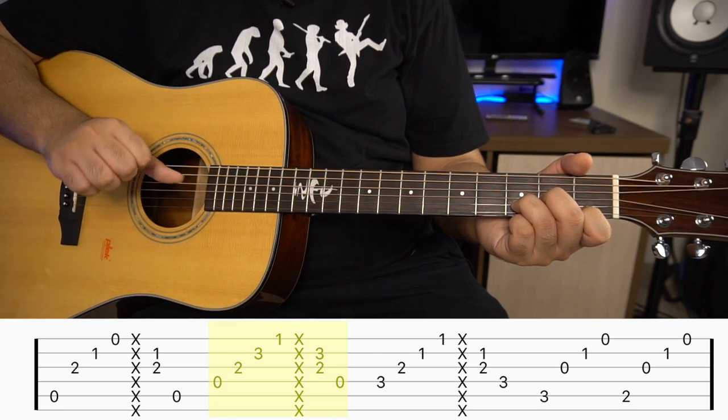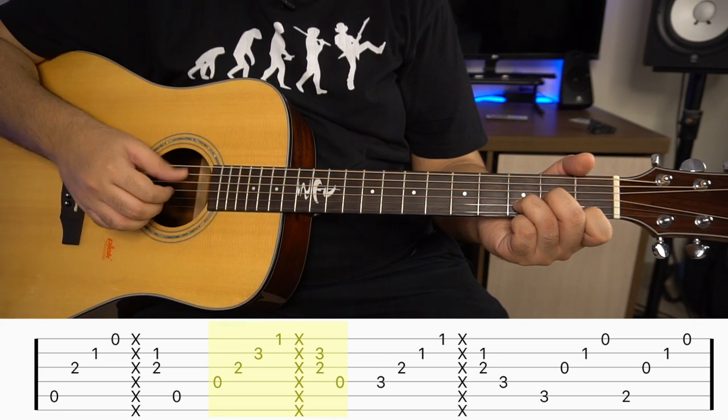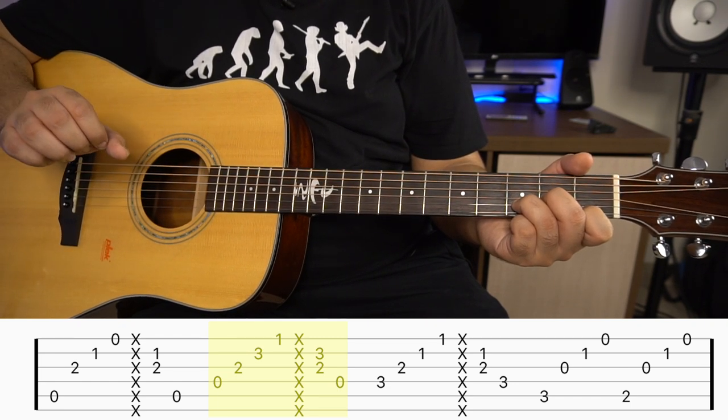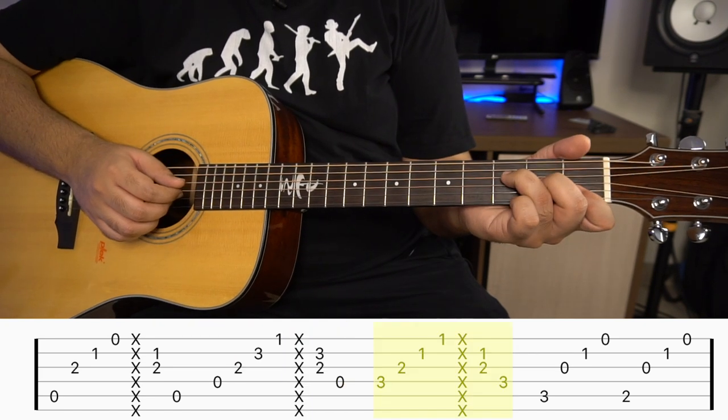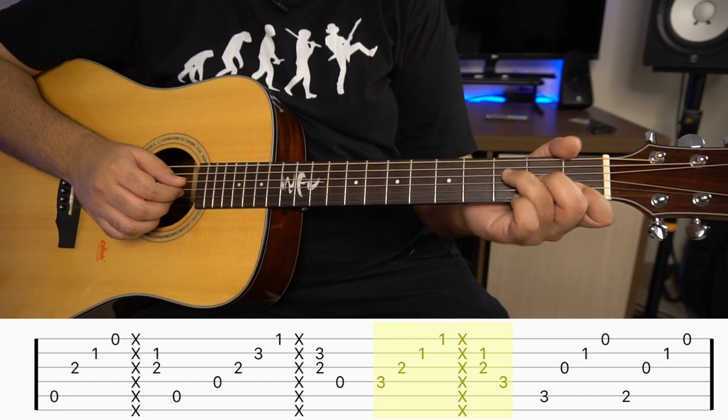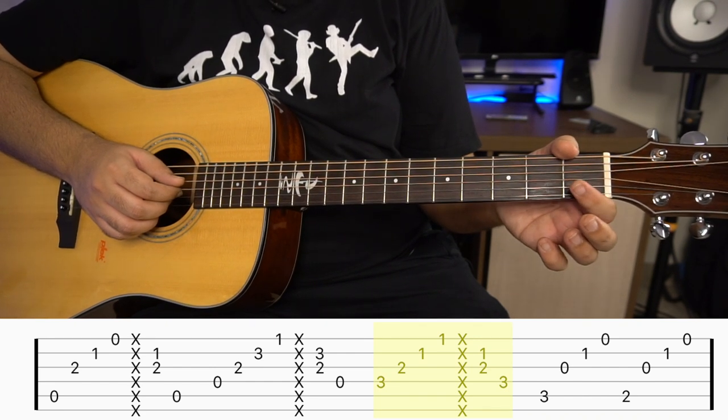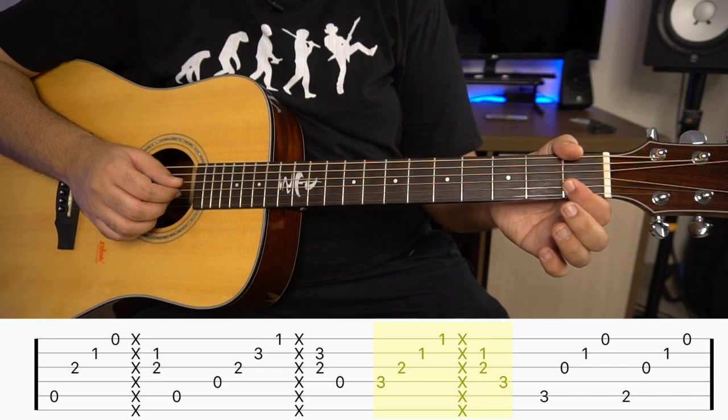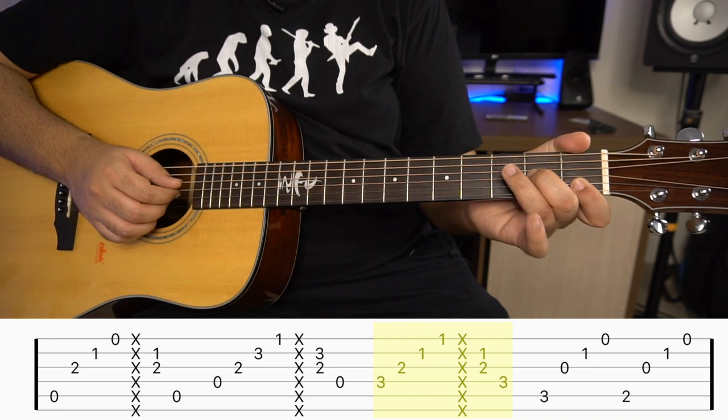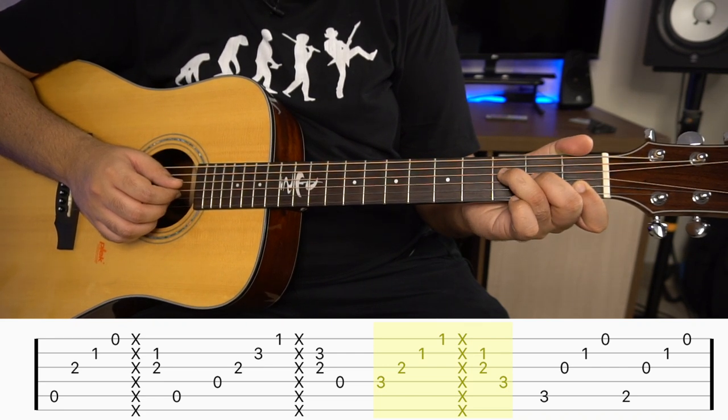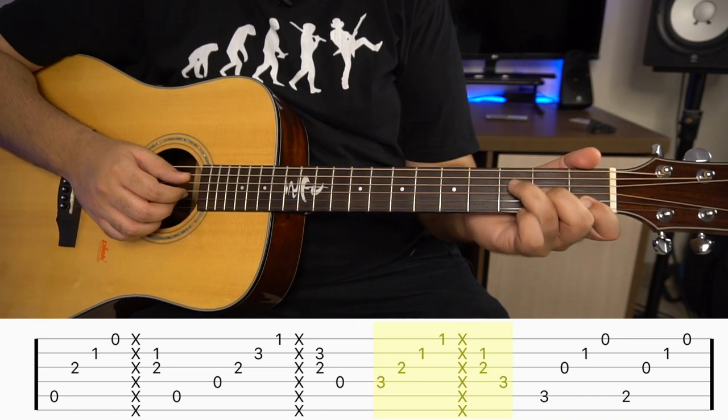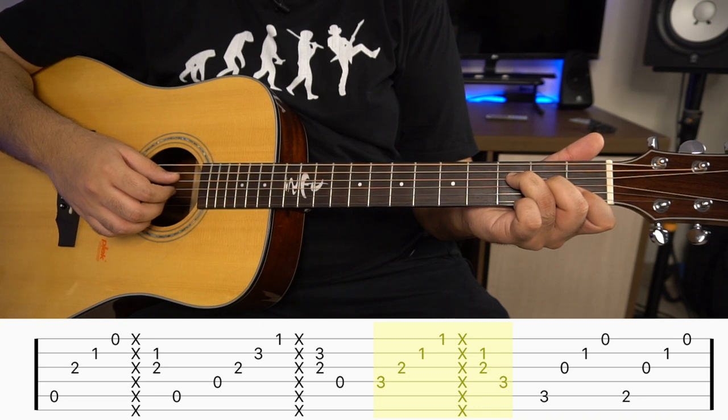Then we will play F major chord. For F major chord, you just need to play the first four strings. Your first finger will be on the first or second string at the first fret, middle finger on the third string second fret, and ring finger on the fourth string third fret. And here the same pattern as we did on D minor.